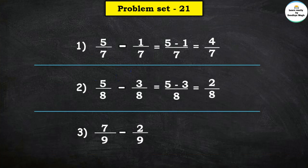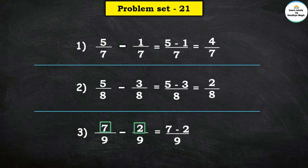Next: 7 upon 9 minus 2 upon 9. The common denominator is 9, so let us write 9 in the denominator's place and subtract the numerators. So 7 minus 2 is equal to 5. The answer is 5 upon 9.